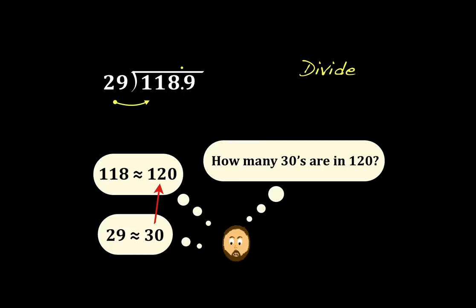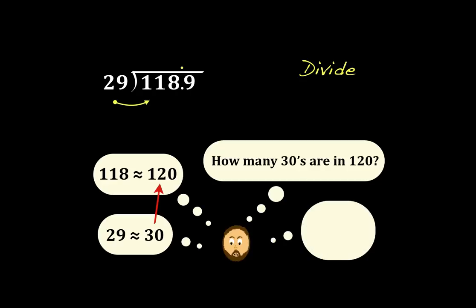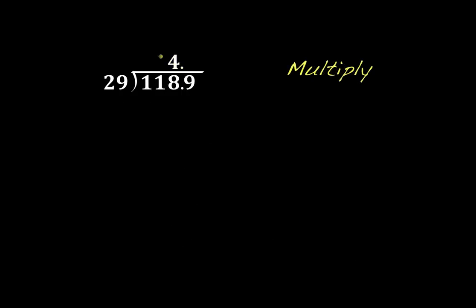So the question I'm going to ask is, how many 30s are in 120? I can just simply count by 30: 30, 60, 90, 120. Or you can do it that way. That's going to go four times. And we'll go ahead and multiply that down and see how that turns out.